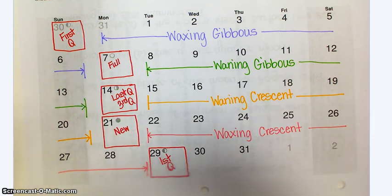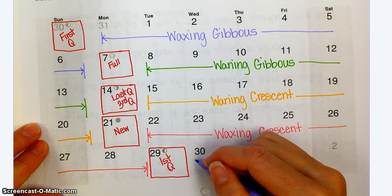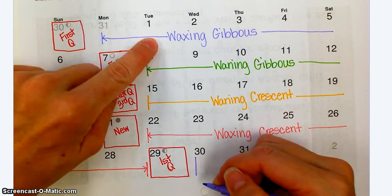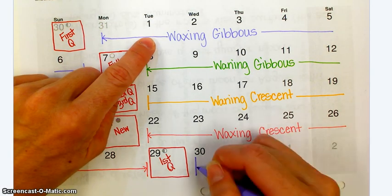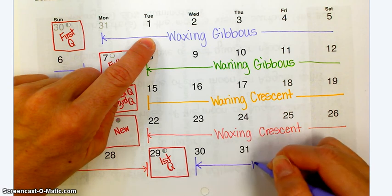29th is a first quarter again. And then, after a first quarter comes what? Waxing gibbous. Waxing gibbous. So I'm going to go back and I'm going to use the same color as I did for the last set of waxing gibbous. And that will finish us out.